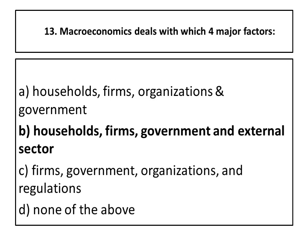Thirteenth question: macroeconomics deals with which four major factors? As we study national income, exports, imports and industries — the right option is households, firms, government and the external sector are included. All the other options are not the right answer.